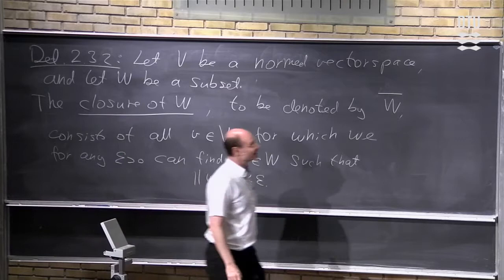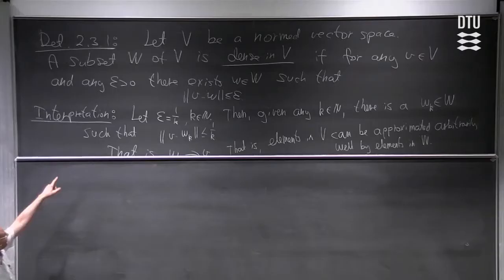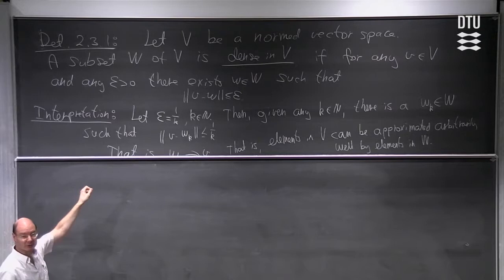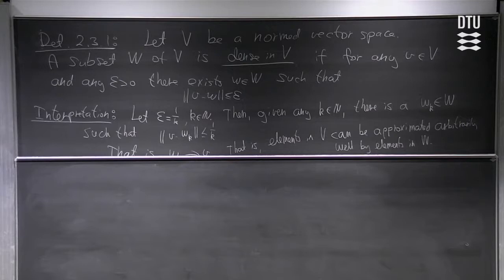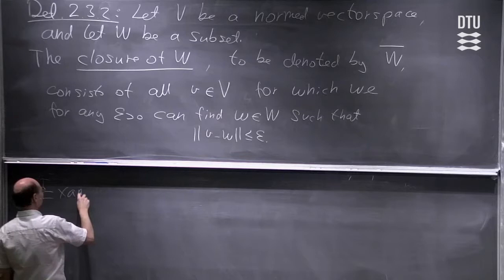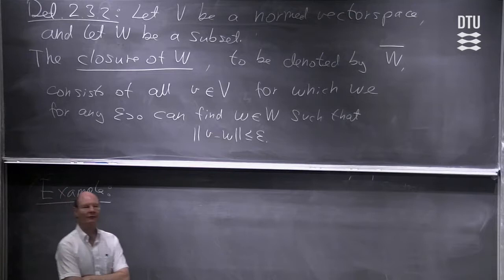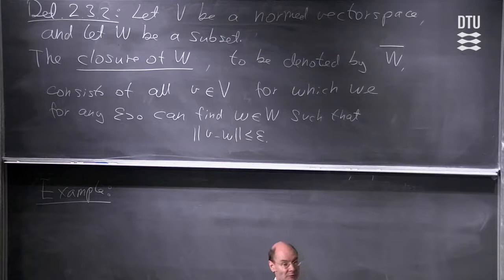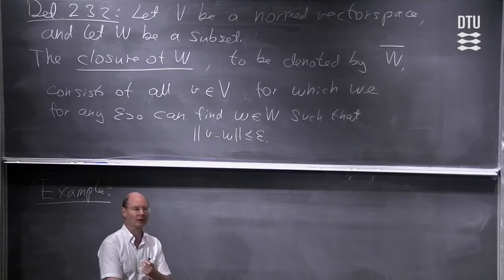Just by looking at this, you can see that this formulation is extremely close to the definition of density — almost the same. We come back to that in just a minute. First, let's give a small example. Remember the concept of the closure of a subset of ℝ, which we already dealt with in the very first lecture. Let's see how it relates to the abstract definition.